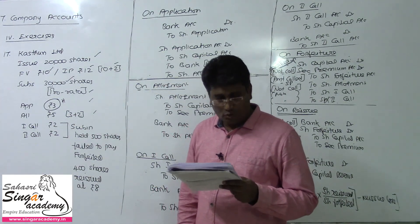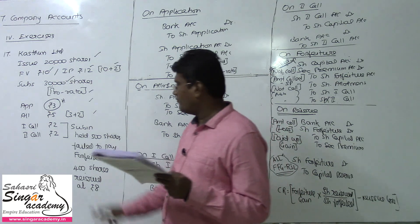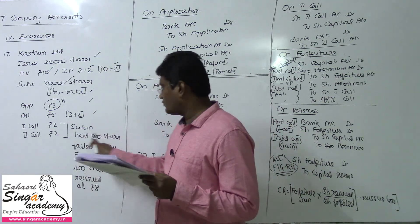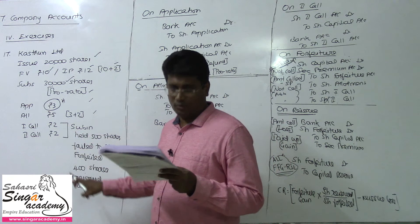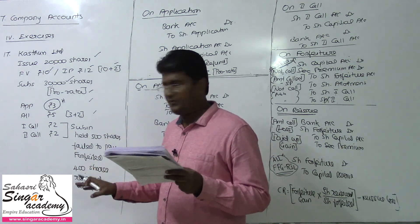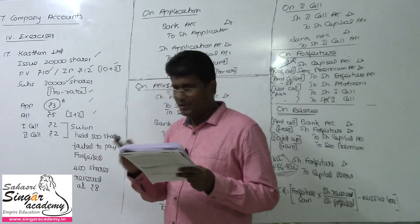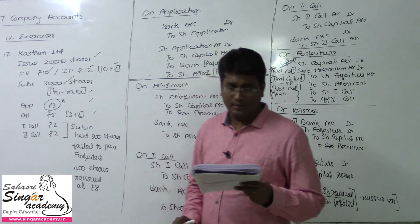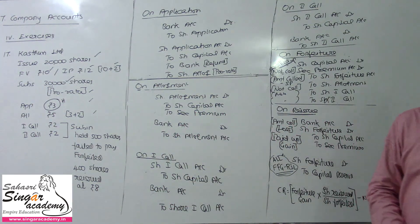Subin, a shareholder, failed to pay the first call and second call on his 500 shares, so all those shares were forfeited. Out of them, 400 shares were reissued at ₹8. We need to pass the necessary journal entries.